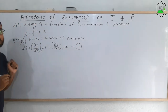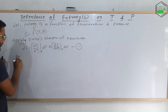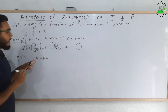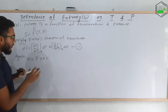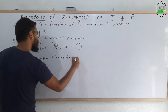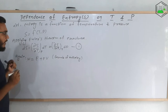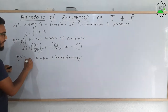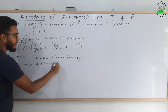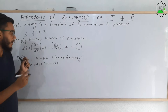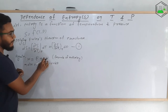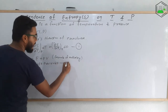Now there is a formula of enthalpy. Enthalpy is given by H = E + pV, where H is the enthalpy, E is the internal energy, p is pressure, and V is volume. Let us differentiate both sides: dH = dE + p·dV + V·dP, applying the product rule to the pV term. Let us consider this to be equation number 2.